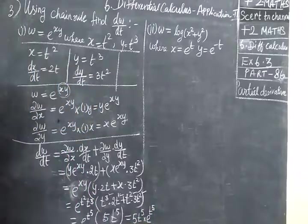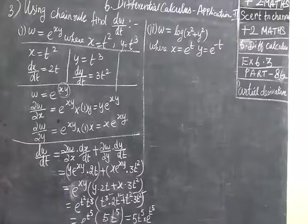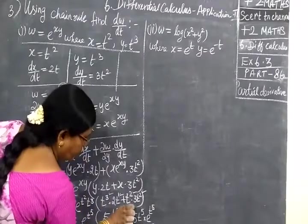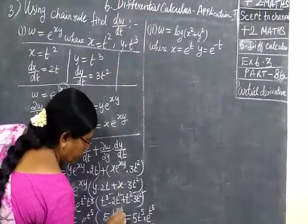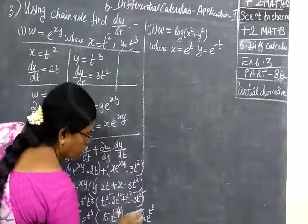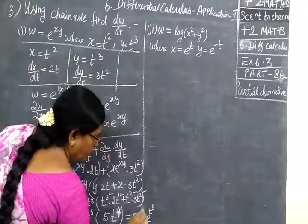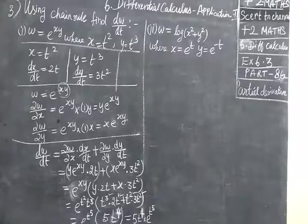Now we check the answer for this. Differentiating 5t power 5 into e power t power 5 gives 5t power 4, since the exponent is 3 plus 1 equals 4. So here also 4. So 5t power 4.